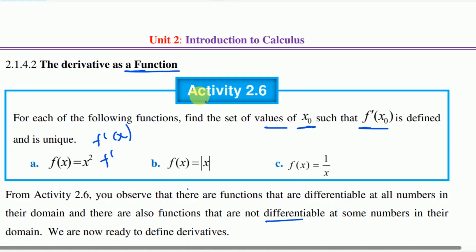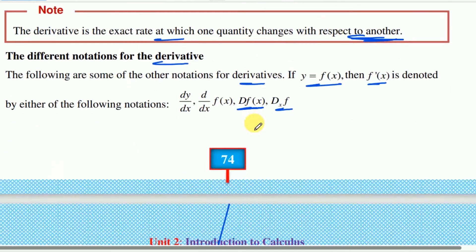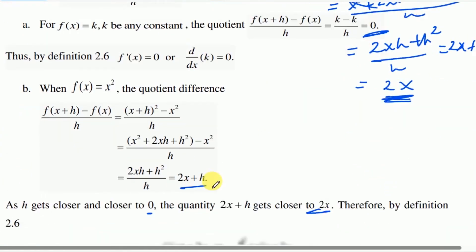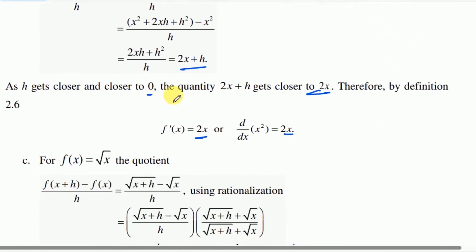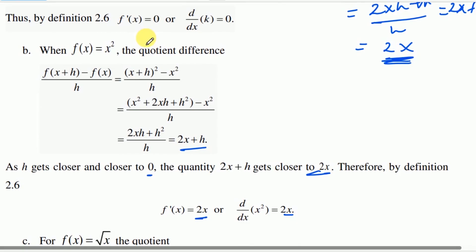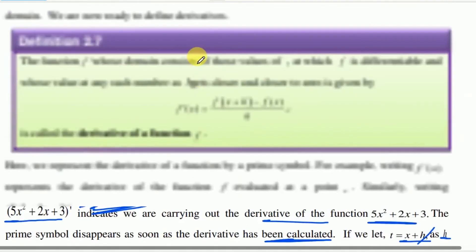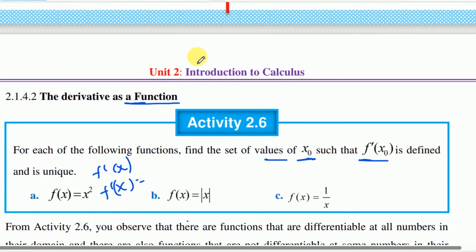You can see that for f of x equals x squared, f derivative of x is equal to 2x. The domain of the function — since f derivative of x equals 2x — is defined for all real x.